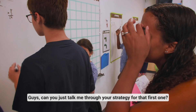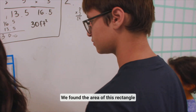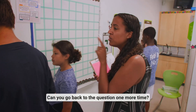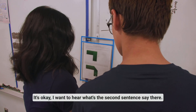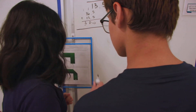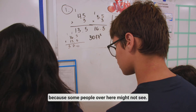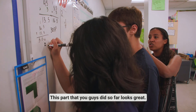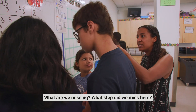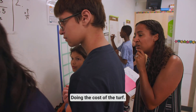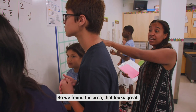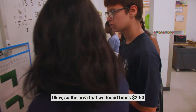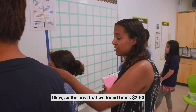Can you just talk me through your strategy for that first one? What did we do there? We found the area of this rectangle and then we found the area of this rectangle. Can you go back to the question one more time? Read that second sentence out loud to the whole group, because some people over here might not have heard. So there's a second part to the question. This part that you guys did so far looks great. What step did we miss? Doing the cost. Okay, cool — so we found the area, that looks great. Now let's find the cost. 2.60 times 30 — the area that we found times $2.60. So as we go through these problems, they're all going to have those two steps: area and then the cost.